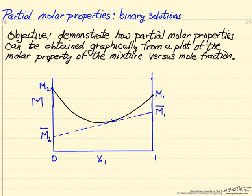In this example I'd like to demonstrate how we can get partial molar properties when we're looking at a binary mixture from just a graphical plot of the molar property of the mixture versus the mole fraction of one of the components. I've plotted on the black line the molar property of the mixture — it could be enthalpy, entropy, Gibbs free energy, or volume. I've indicated M1, the pure component value for component one, and likewise for component two. This black line is the value for the solution.